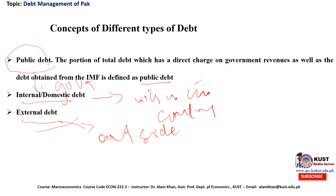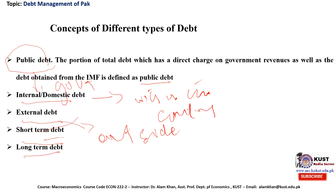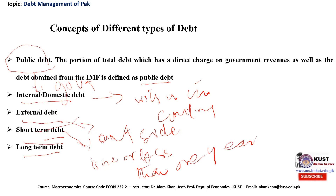Another common division of public debt is by duration until repayment is due. On the basis of duration, it may be short-term debt — considered short-term if its duration is up to one year or less than one year — or long-term debt, whose duration is more than ten years.